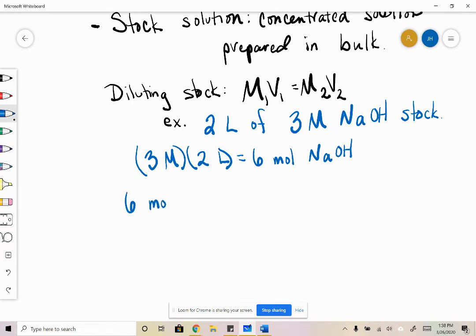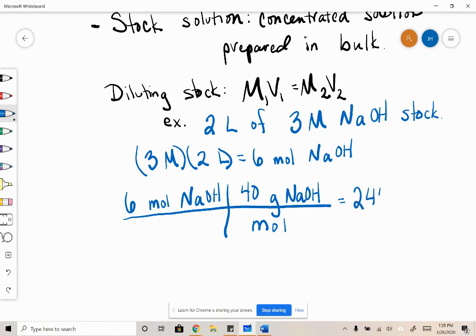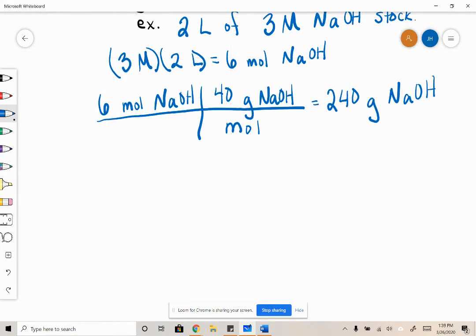So 6 moles of NaOH, we'll do some dimensional analysis. There are 40 grams of NaOH per mole, so we would need 240 grams of NaOH. We would put that 240 grams into a 2 liter volumetric flask and dilute appropriately with just pure distilled filtered water.